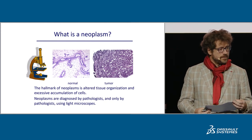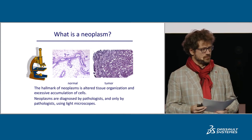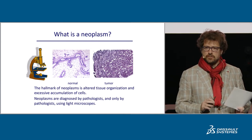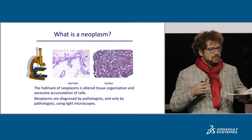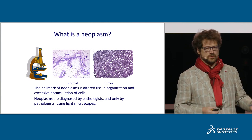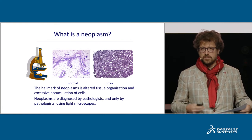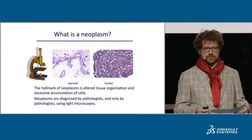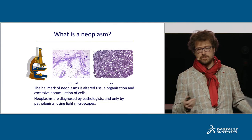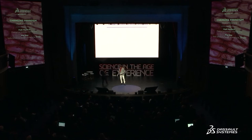Now we can come back to cancer and raise the question of what a neoplasm is — basically, a cancerous tumor. The neoplasm, if we take a step back from the usual rationale about mutation, is primarily altered tissue organization and an excessive accumulation of cells. In practice, even nowadays, even though there are markers, neoplasms are diagnosed by pathologists, and only by pathologists using light microscopes.